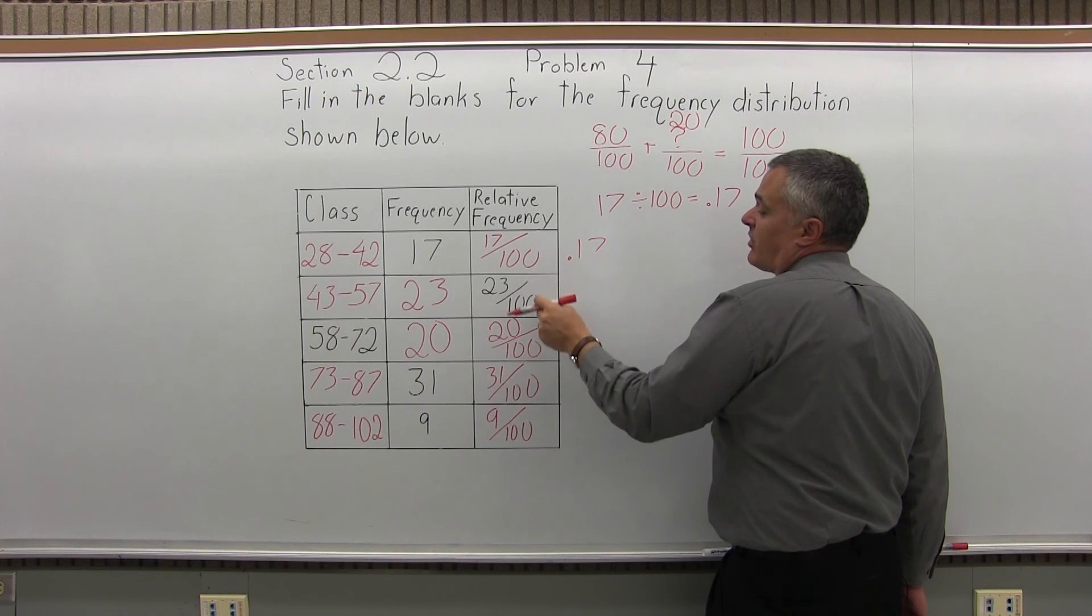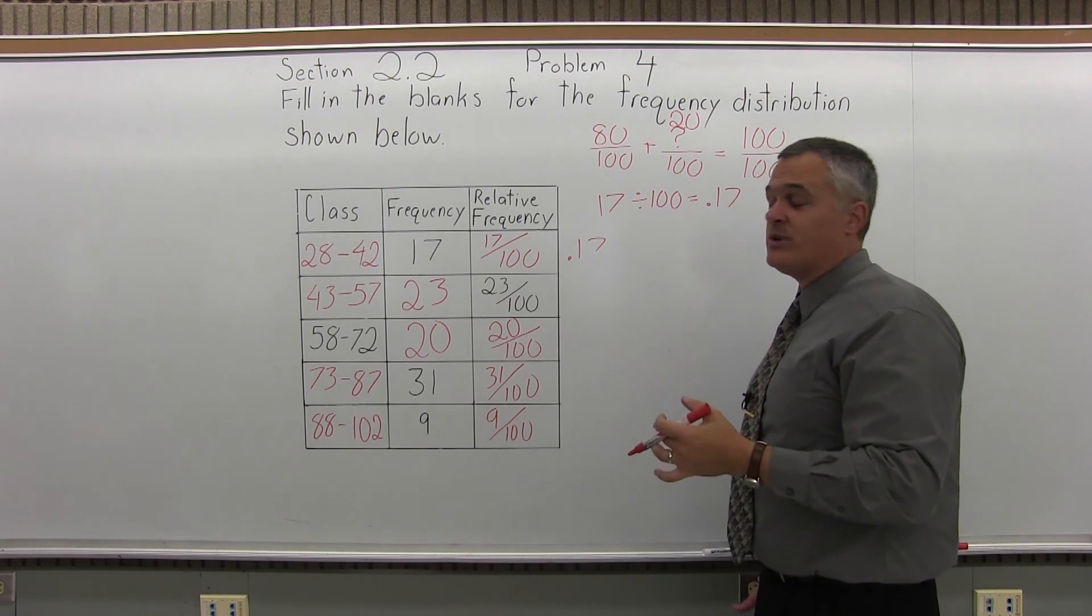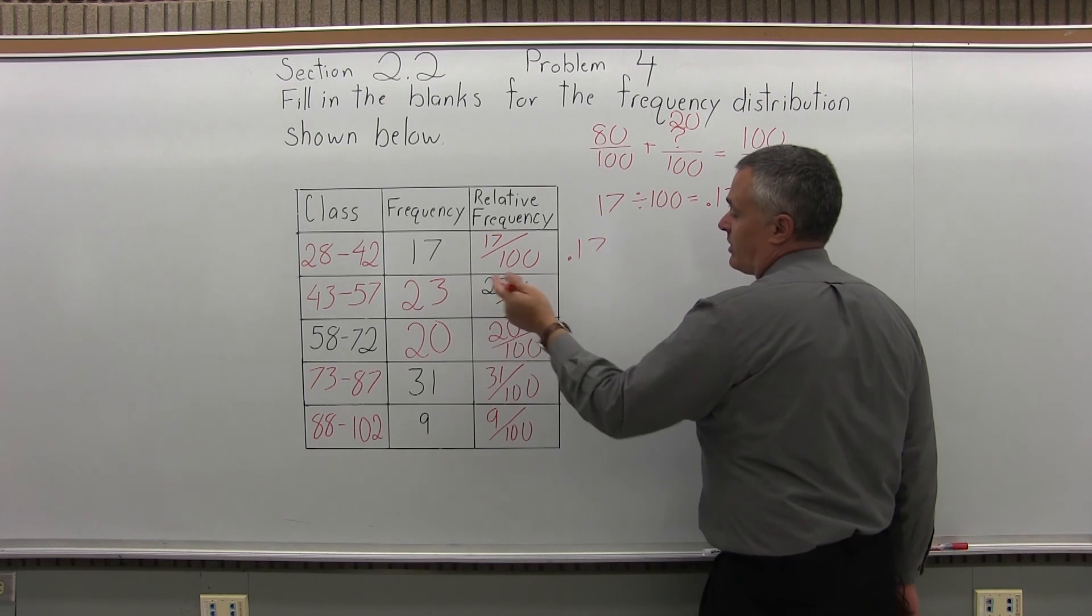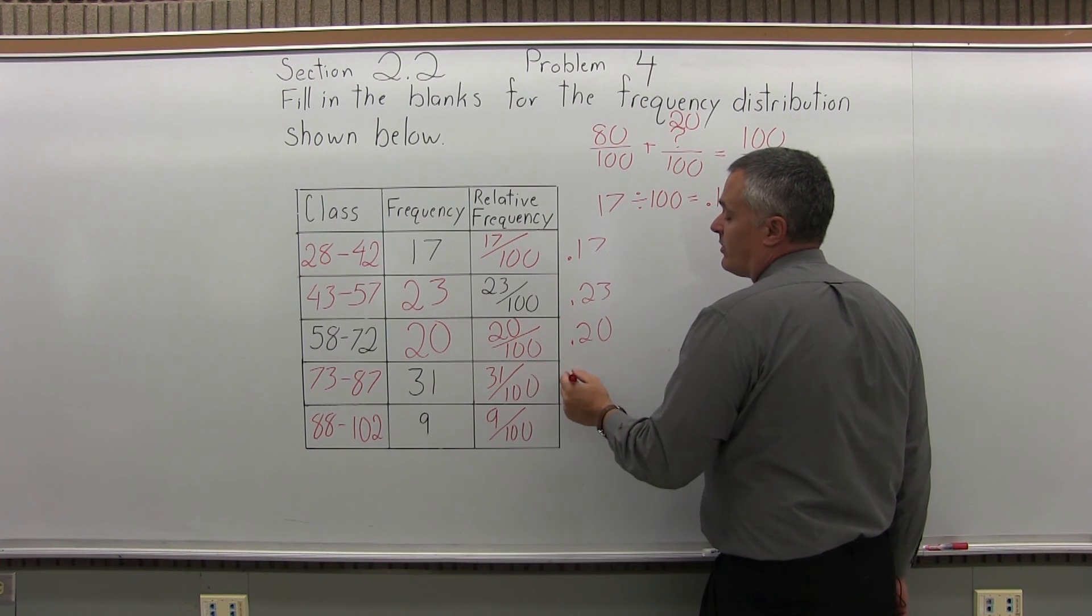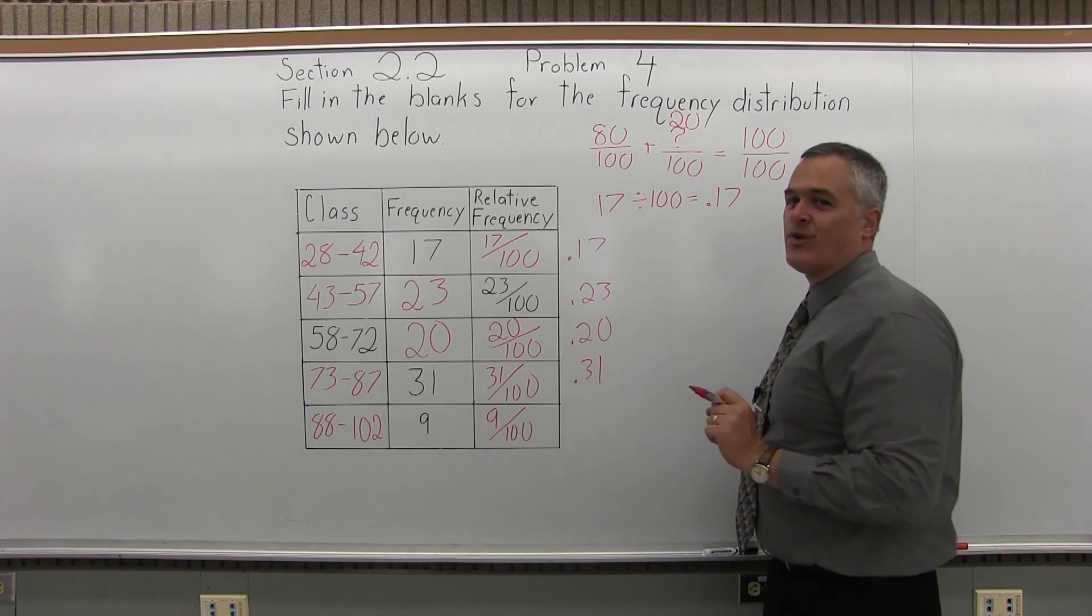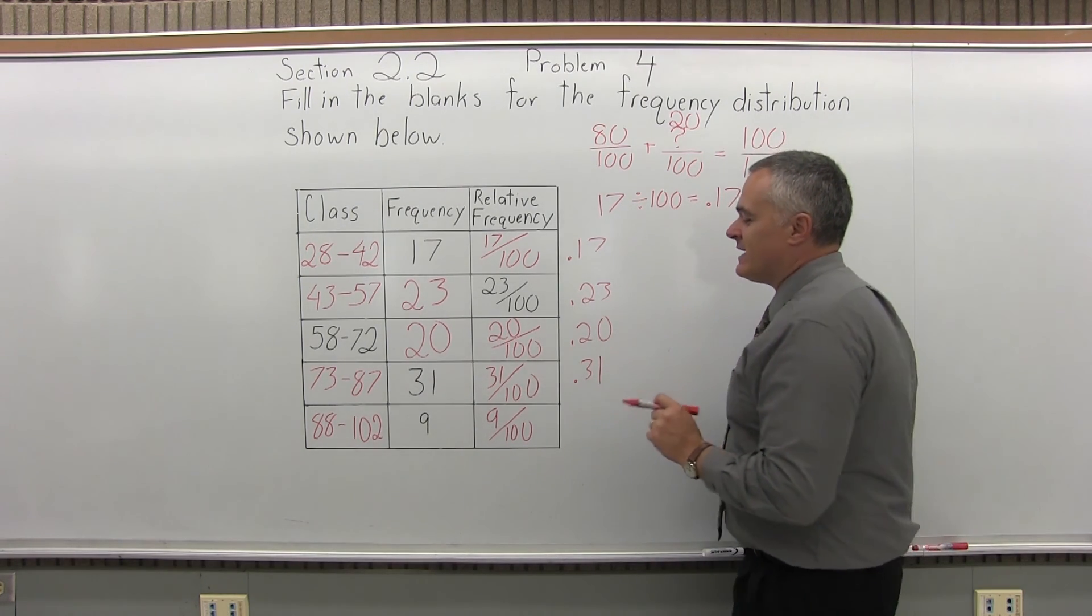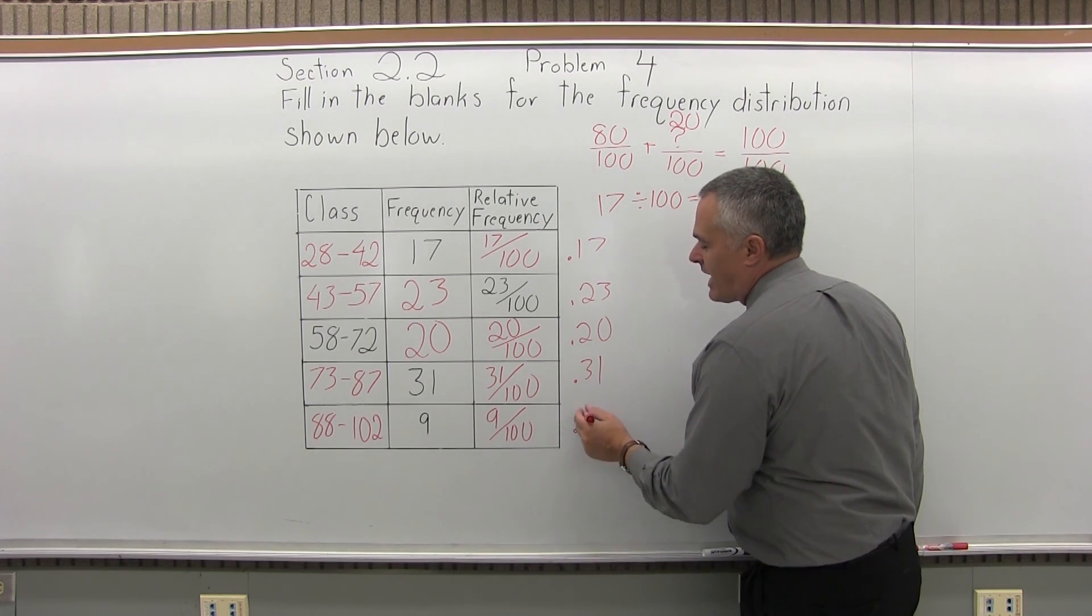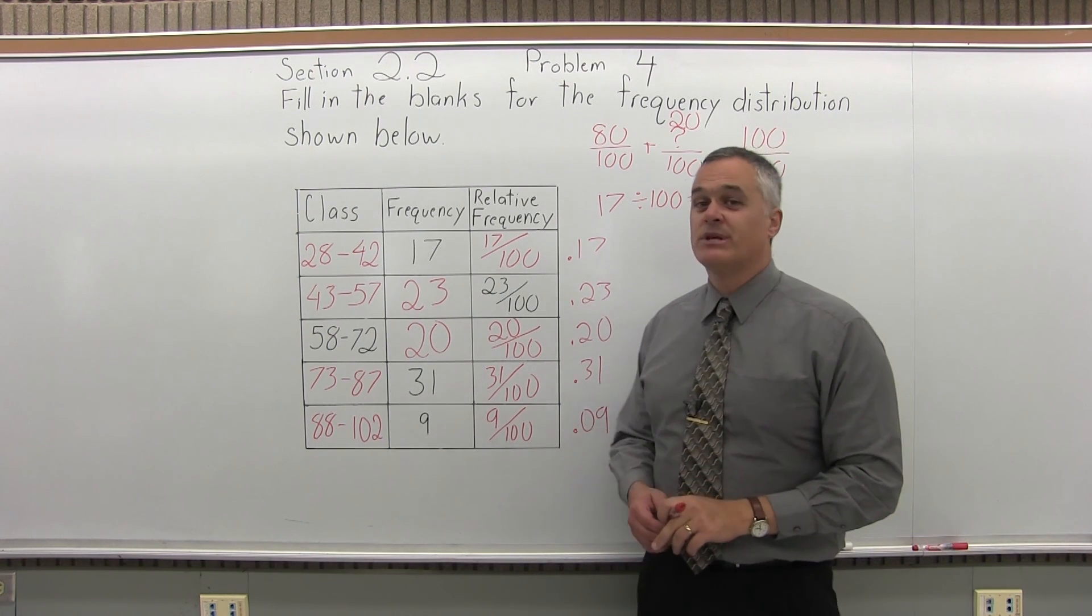And then you do the same process for each one of these. Though, with the 100 denominator, you really don't need to use your calculator. The 23 over 100 is .23. The 20 over 100 is .20. The 31 over 100 is .31. Be careful with the 9 over 100. That's not .9. That's .09. There's a big difference. 9 over 100 is .09.